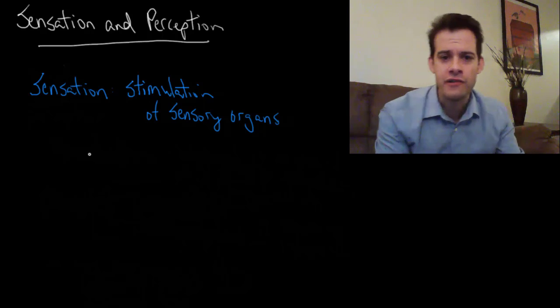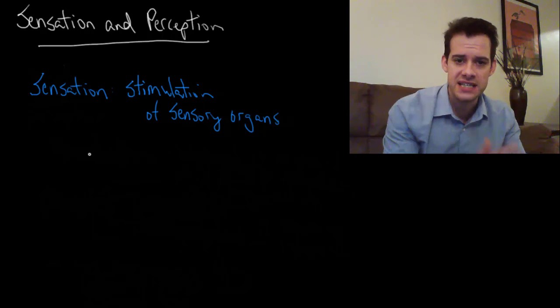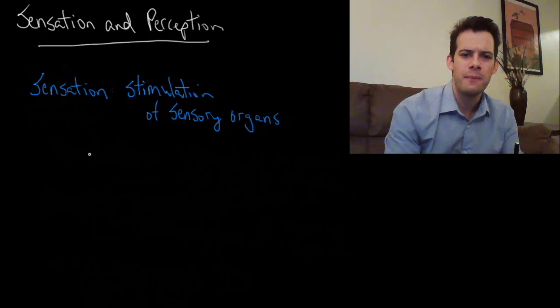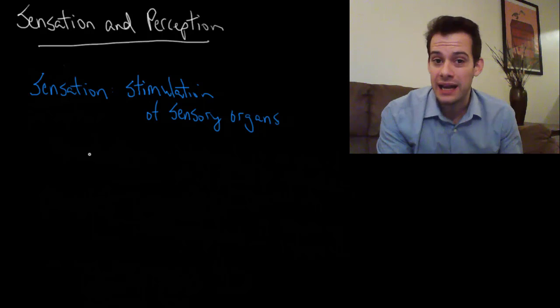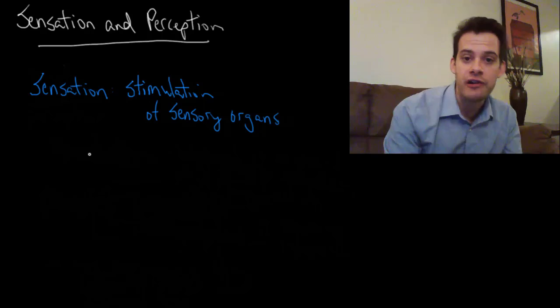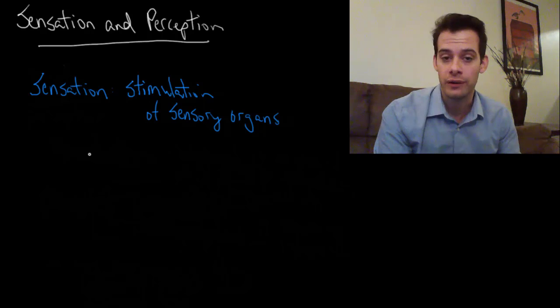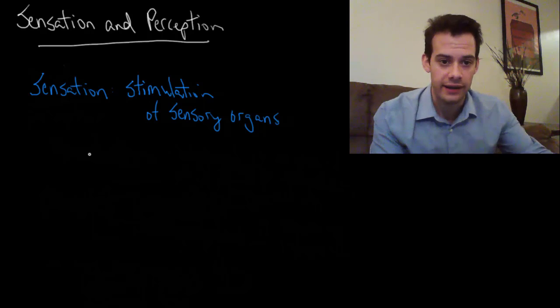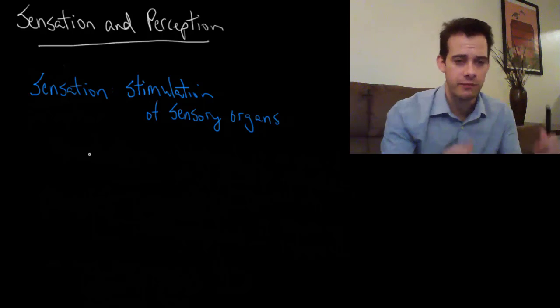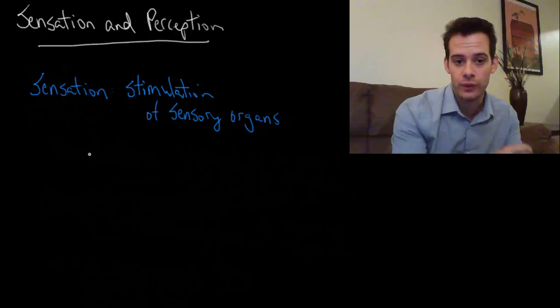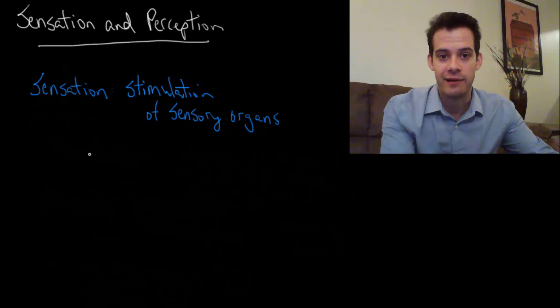Now we have to convert this stimulation because this is a physical signal in the world, but it's not something that our brain can really work with. We need to convert it into the language of the brain, and the language of the brain is neural activity—neurons firing. So we need some process to go from a physical signal like a light wave or a sound wave into neurons firing in the brain.